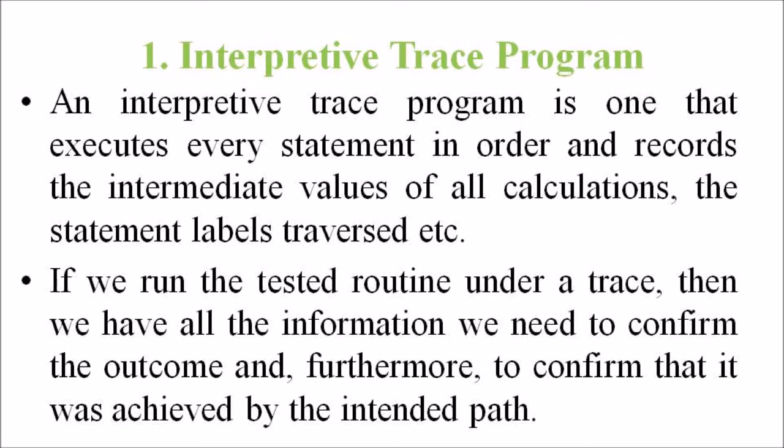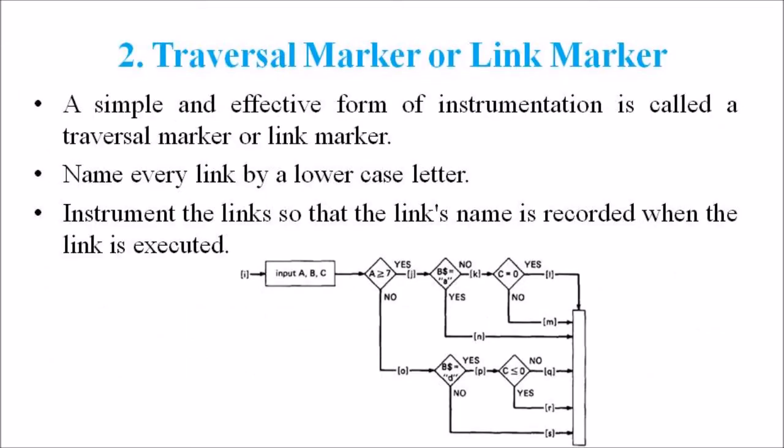The second one is the traversal marker or link marker. A simple and effective form of instrumentation is called a traversal marker or link marker. Name every link by a lowercase letter. Instrument the links so that the link's name is recorded when the link is executed. The succession of letters produced in going from the routine's entry to the exit should, if there are no bugs, exactly correspond to the path name.